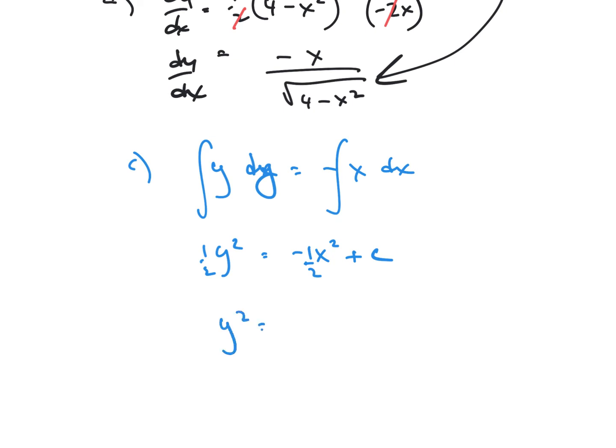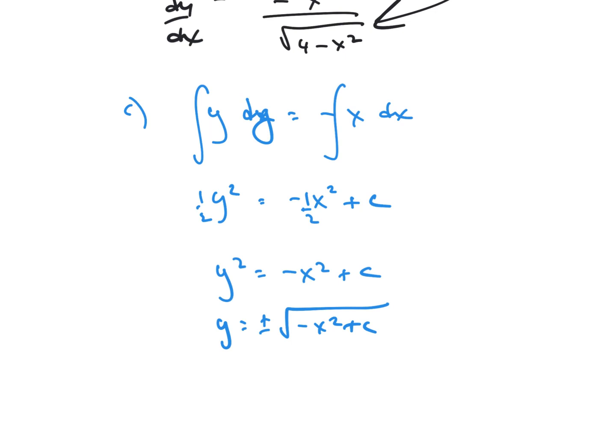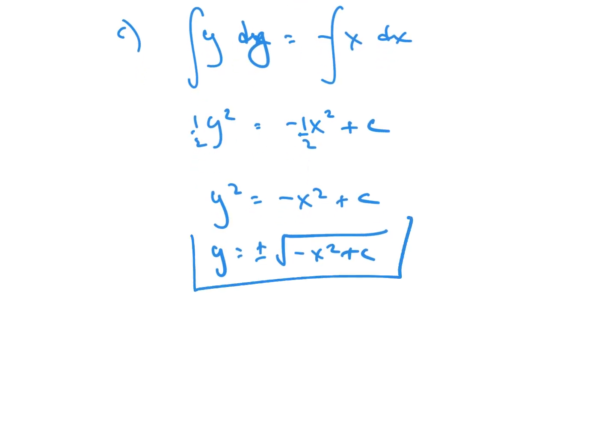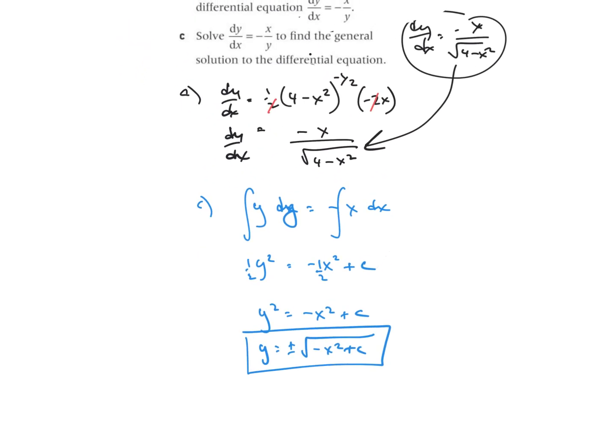Multiplying by 2, I get y² is equal to -x² plus, well, 2c, which is still some constant c. And then I can square root. I get plus or minus the square root of -x² plus c. And so this is my general solution to the differential equation.